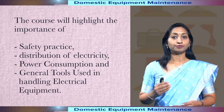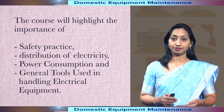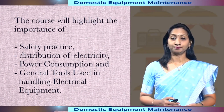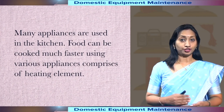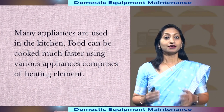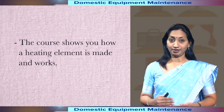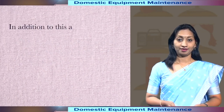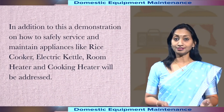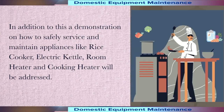The first few modules of the course will highlight the importance of safety practice, distribution of electricity, power consumption and general tools used in handling electrical equipment. Many appliances are used in the kitchen. Food can also be cooked much faster using various appliances comprising of heating elements. The course shows you how a heating element is made and works. A demonstration on how to safely service and maintain appliances like rice cooker, electric kettle, room heater and cooking heater will also be addressed.